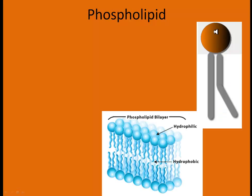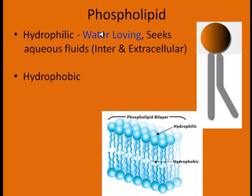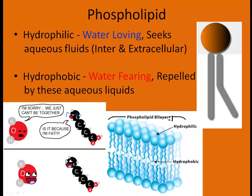A phospholipid has a phosphate head sitting on top of two lipid tails — a saturated tail and an unsaturated tail. If a carbon is missing a hydrogen, it can double bond, which puts a kink in the tail. The phosphate head is hydrophilic — water-loving — seeking out aqueous fluids. The tails are hydrophobic — water-fearing — repelled by water, which is why they stay toward the center with the loving side on the outside and the fearing side on the inside.